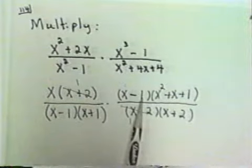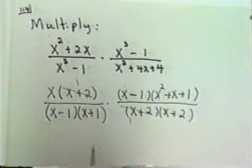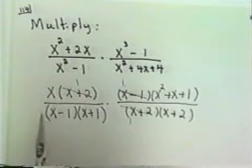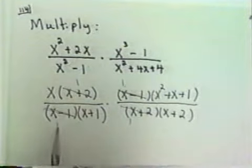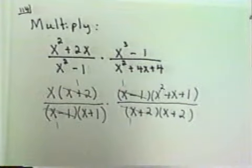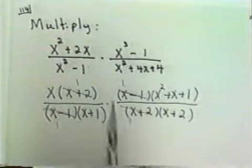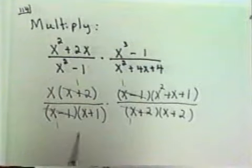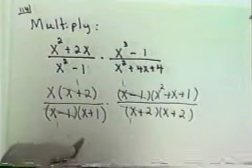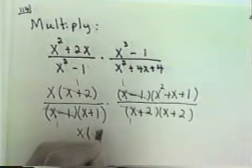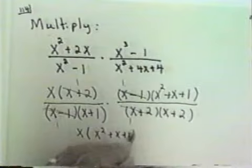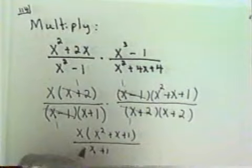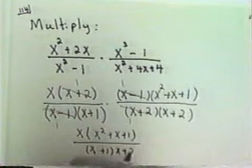I also have a factor of x minus 1 in the numerator and a factor of x minus 1 in the denominator, so I'm going to divide the numerator by x minus 1 and also divide the denominator by x minus 1. I have no other factors common to both numerator and denominator. Therefore I will now give the answer by multiplying the numerators together, which would be x times x squared plus x plus 1, and multiplying the denominators together, which would be x plus 1 times x plus 2.